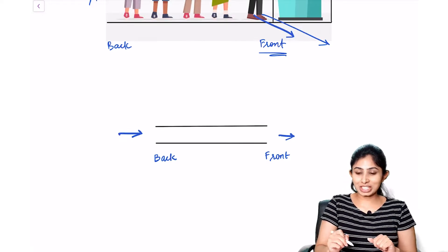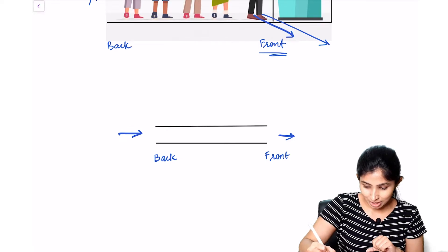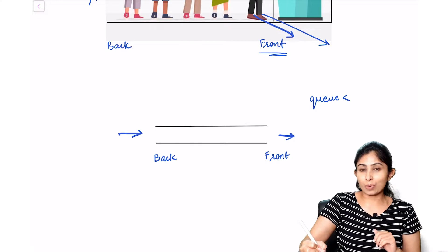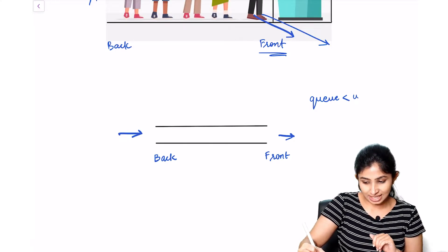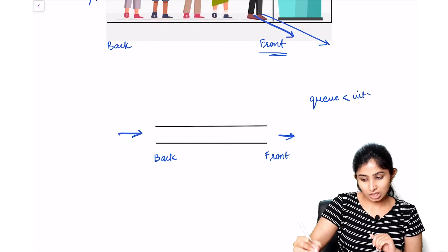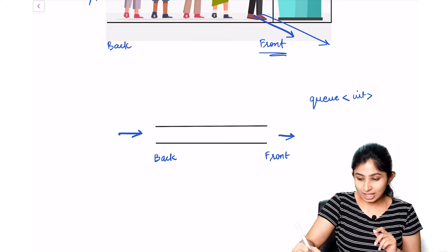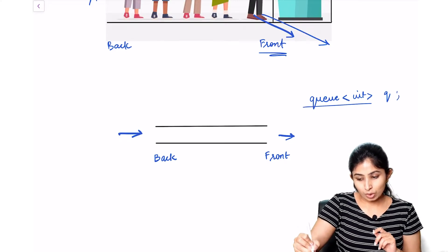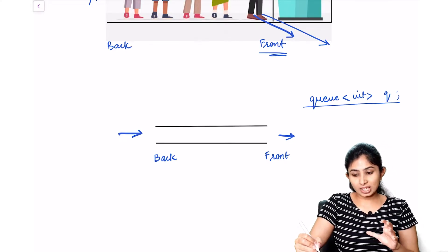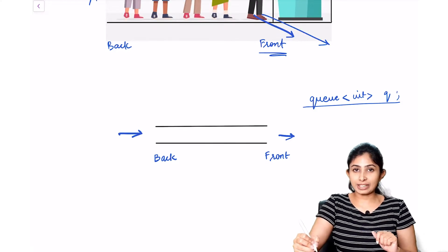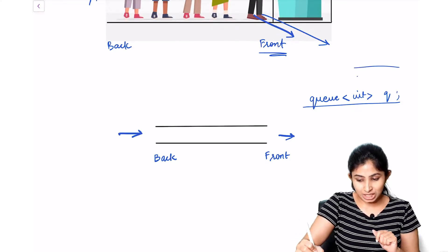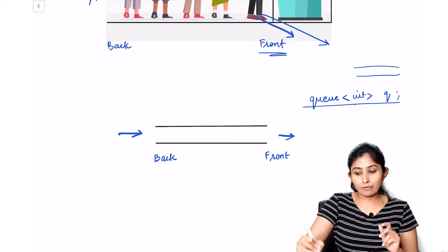Let's see how we can define a queue in STL. We write the data type of the elements we want to store in the queue — let's say integer — and the identifier that will represent the queue. So we define it as: queue, the data type, and the identifier. This will create an empty queue that can store integer values.